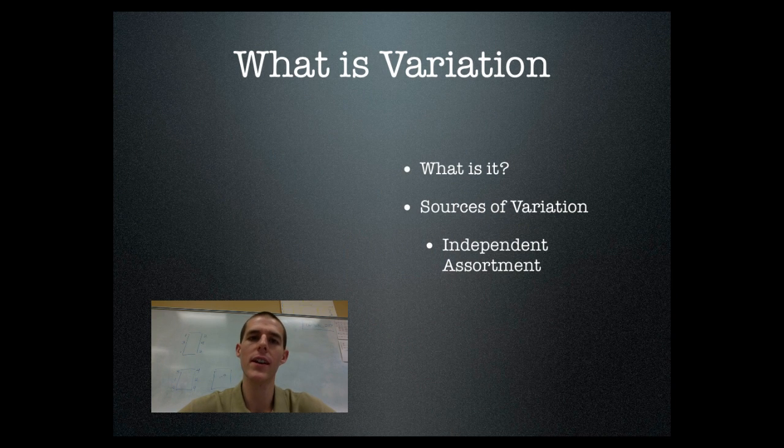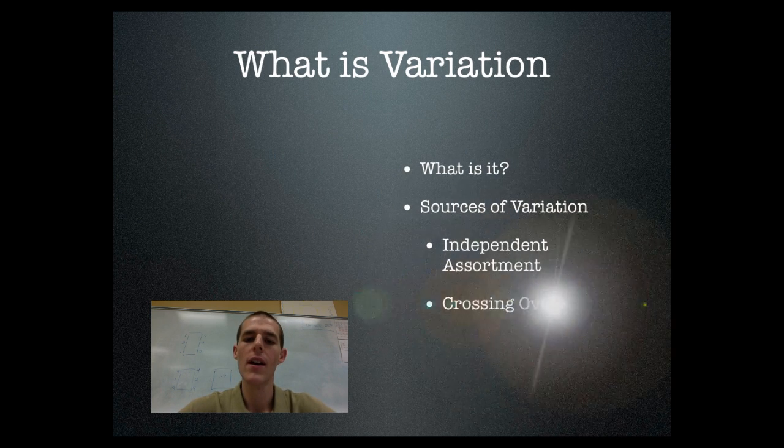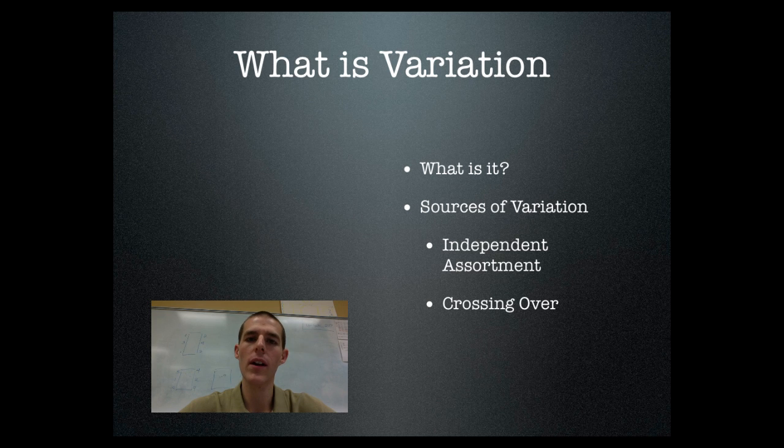There are three major ways that variation occurs that you will need to know about. So the first source of variation is independent assortment. Second one is crossing over, and the third one is random fertilization. I'm going to talk about each one of those individually, so let's get on into it.